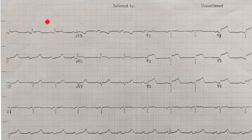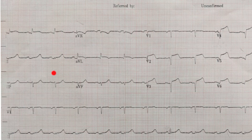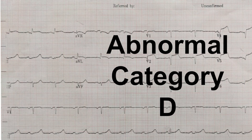Looking at the highlighted leads, there is clear ST elevation compared to the baseline — whether TP or PR — visible in V2, V3, V4, V5, and V6. There is ST elevation involving anterolateral leads, and reciprocal changes between AVL and lead 3. This is a Category D EKG — abnormal and requiring immediate emergent intervention. This is a STEMI, or occlusion myocardial infarction. Remember: T-wave amplitude is always relative to the QRS, and always compare ST to a known baseline segment.